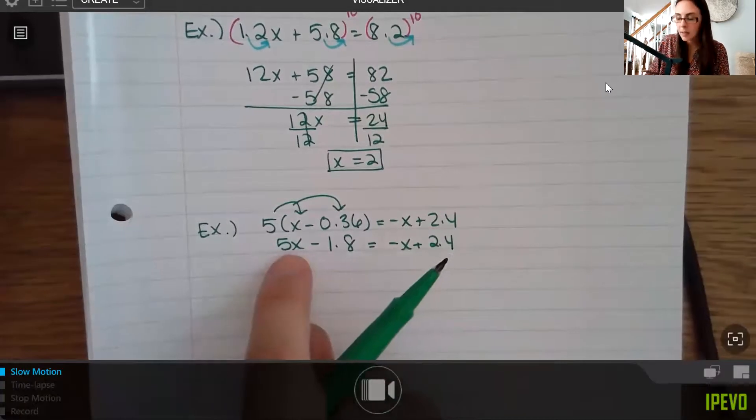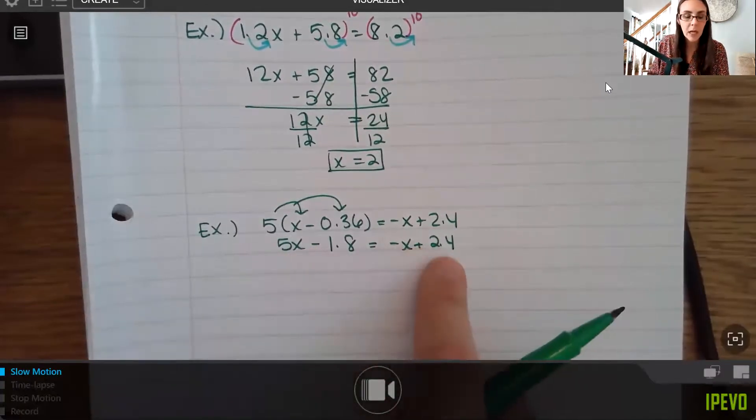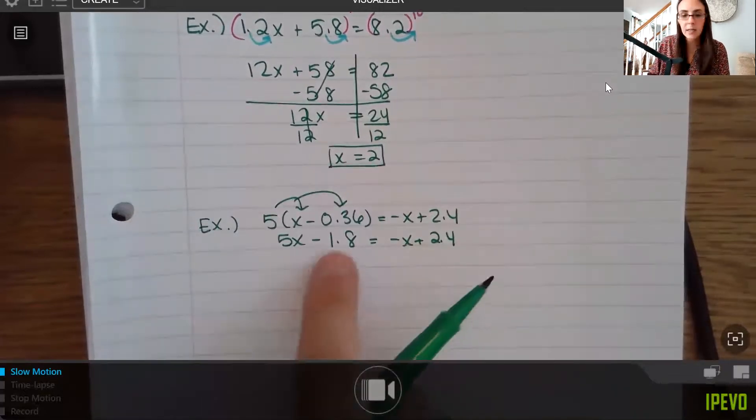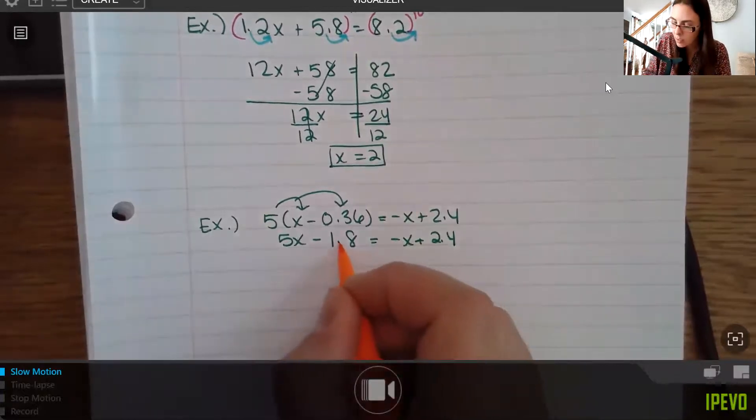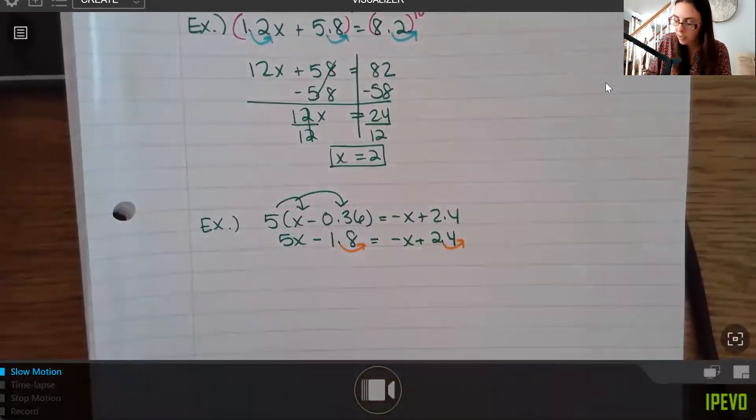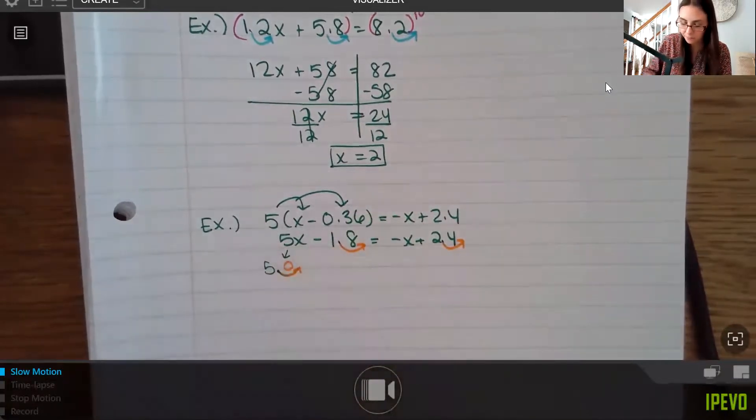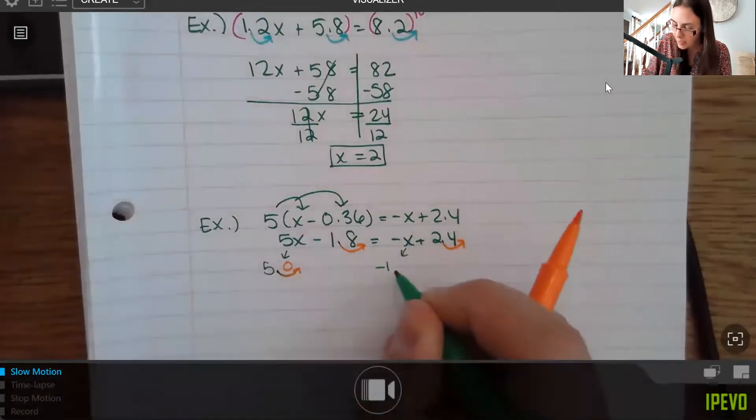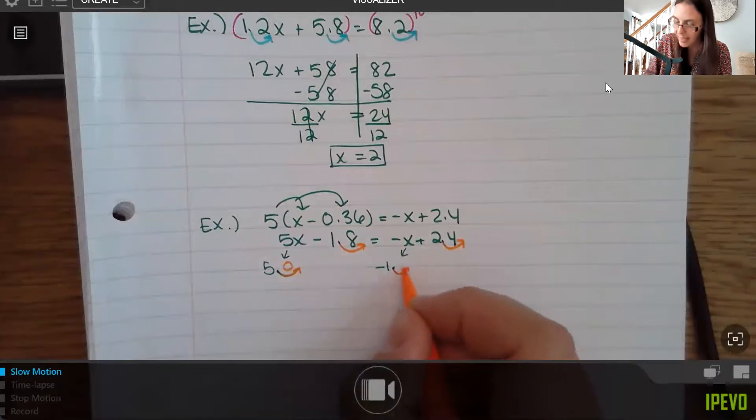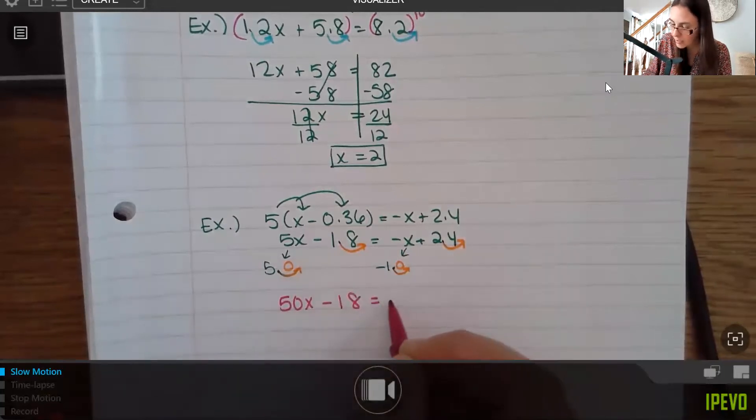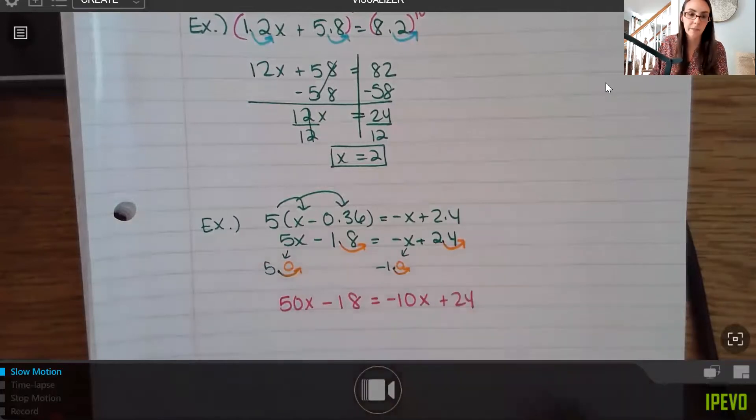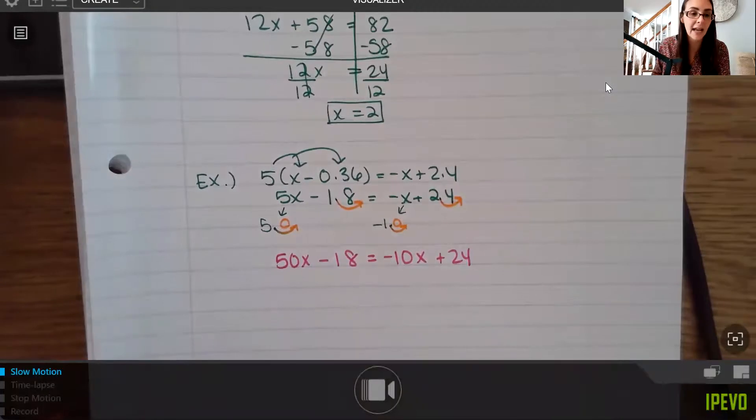Now, here, notice I have no decimal places. Here I have one. Here I have none. Here I have one. So you want to use the max number of decimal places when you do this. So 1 is the max. So I'm going to cancel my decimals by moving everything by one decimal place. So I do this and this one. But I also have to do the whole numbers. So think about this. This is 5, right? Maybe I'm going to rewrite this for a second. This is 5. And the decimal point is on the right. So I still have to move that one place. So it becomes a 50. And this is negative 1 with the decimal point on the right. And I still have to move it one place. So it's going to become negative 10. So I'm actually going to end up solving the problem. 50x minus 18 equals negative 10x plus 24. So you do have to be consistent. Everything gets moved, even if it has no decimals.